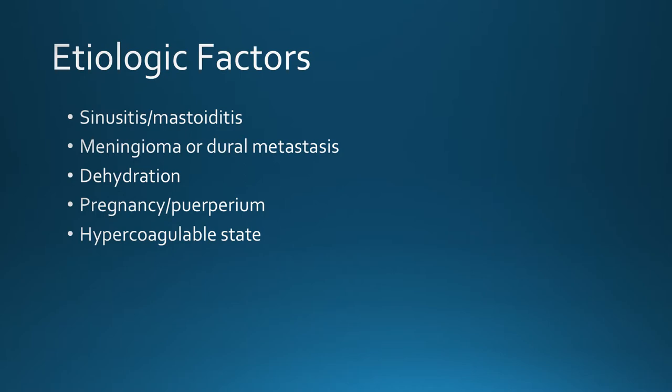Etiologic factors include adjacent sinusitis or mastoiditis with secondary occlusion of the sinuses. Meningioma and dural metastases can cause sinus occlusion — meningiomas typically cause gradual sinus occlusion that most often does not cause clinical symptoms. Dehydration is a cause, particularly in children, as are pregnancy and hypercoagulable states.